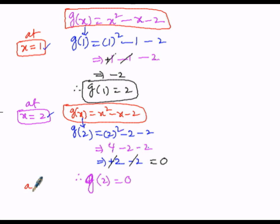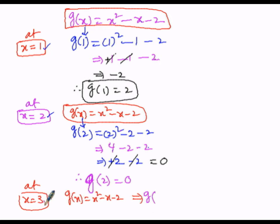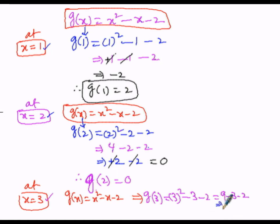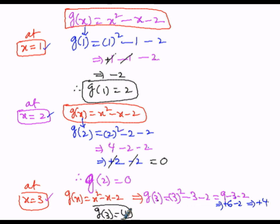In the third case, at x equals 3: g(x) equals x squared minus x minus 2. So g(3) equals 3 squared minus 3 minus 2, which is 9 minus 3 minus 2. 9 minus 3 is 6, and 6 minus 2 is 4. So g(3) equals 4.